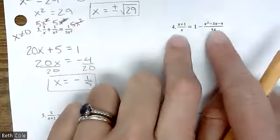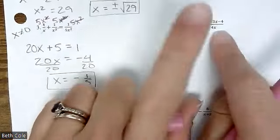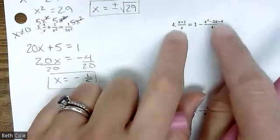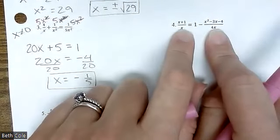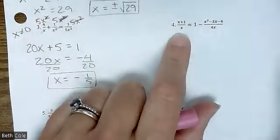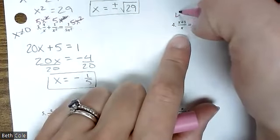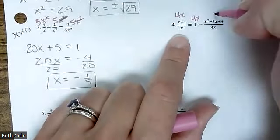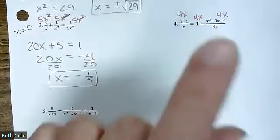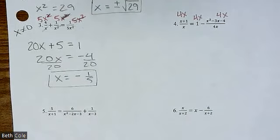Looking at this one, what's your common denominator? Four X — don't overthink it. You're going to multiply four X to all three of those, and yes, that one counts as its own separate term because it's separated by that minus sign.